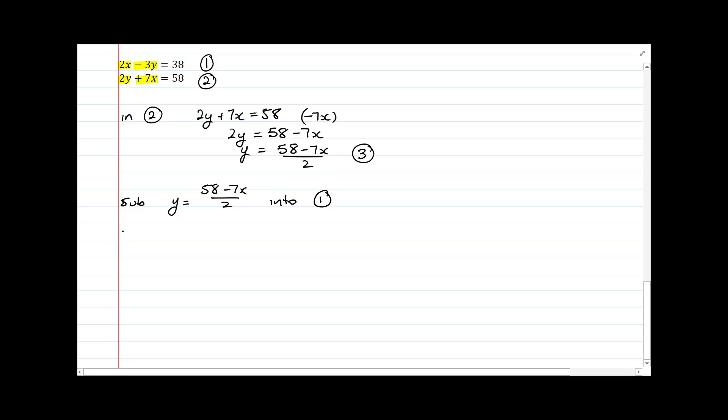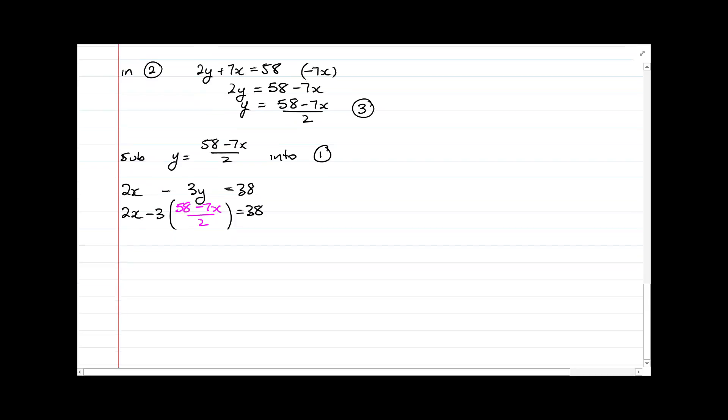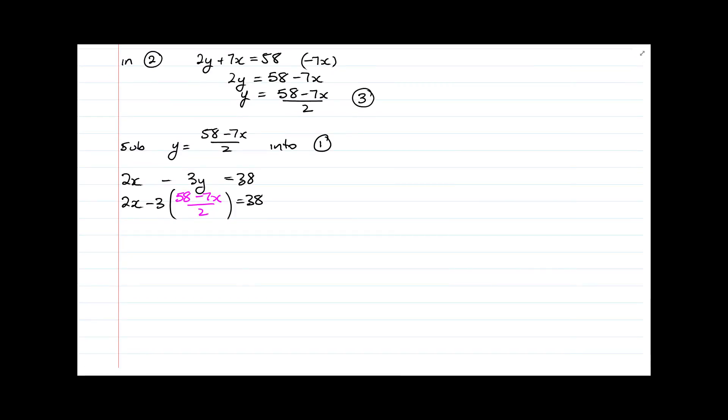So I'm going to sub y equals 58 minus 7x over 2 into equation number 1. So in equation number 1 I have 2x minus 3y is equal to 38, which means I now have 2x minus 3 bracket equals 38, and inside the bracket I have 58 minus 7x over 2. Now I'm going to simply solve this equation. And I say simply, obviously it's going to take a bit of work, but I want you to realize that we're just using techniques you've learned before. The first I'm going to expand this bracket, and I need to be really careful here. So that negative 3 is multiplied by everything on the inside, but I only need to multiply it by the numerator.